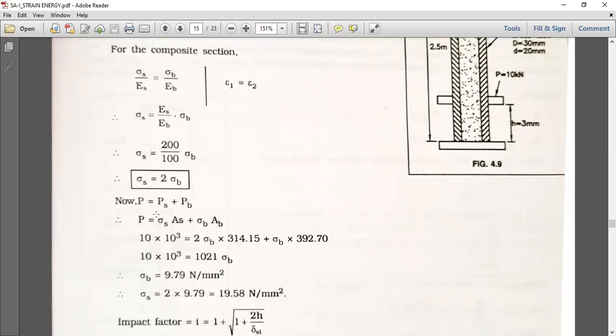Total load P equals load on steel plus load on brass. Put the values: P equals sigma S times As plus sigma B times Ab. We know that sigma equals P by A. So load 10 kilonewton, 10 times 10 raised to 3 converted into Newton, equals 2 times sigma B (which is the sigma S value from this equation) times 314.15, plus sigma B times 392.70, which is its area. To simplify, we can get sigma B equals 9.79 Newton per mm square.